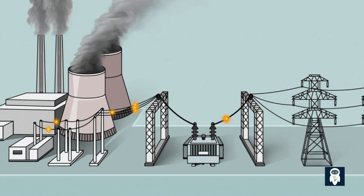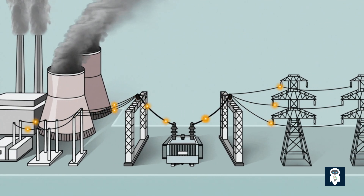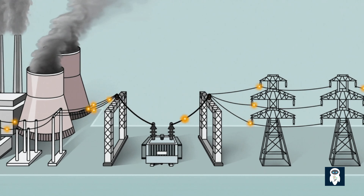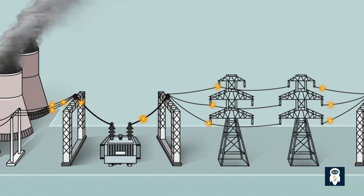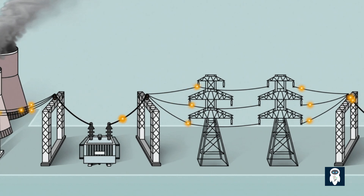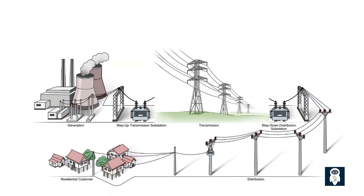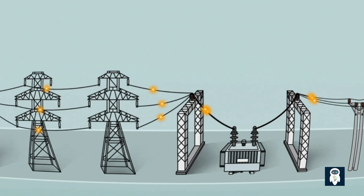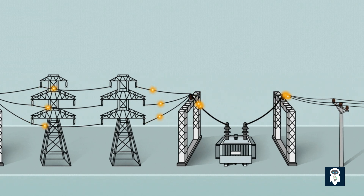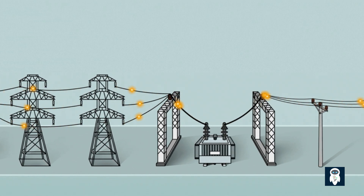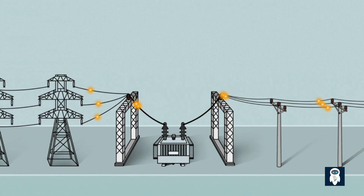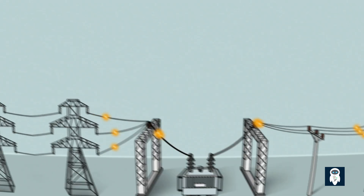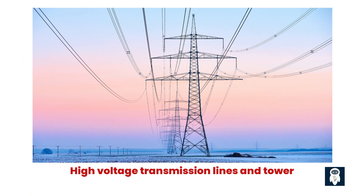Power plants generate electricity at very high voltages to minimize energy losses during transmission. These high voltages, typically in the range of hundreds of kilovolts or even megavolts, allow the electricity to travel long distances efficiently. When it comes to transmitting electricity over long distances, the transmission lines play an important role. These lines consist of multiple conductors, usually in the form of overhead wires, supported by tall transmission towers or poles.